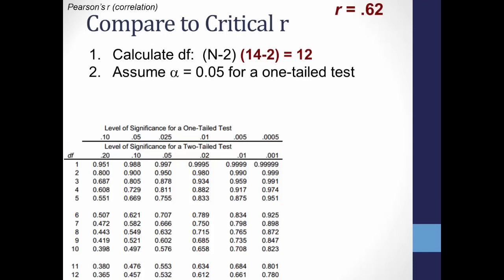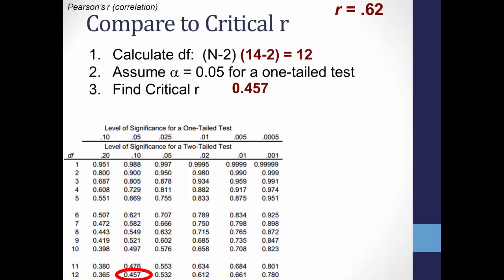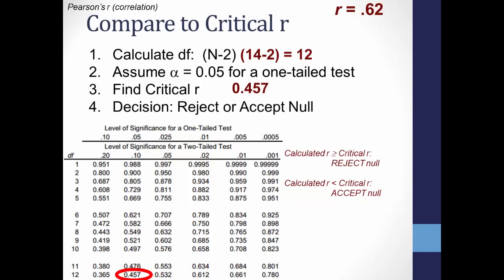Assuming an alpha level of .05 for a one-tailed test — meaning we're only willing to accept a 5% chance of error and want to be 95% confident — we look for the critical r. Find where 12 degrees of freedom intersect with a one-tailed test at .05, and that gives us 0.457 as our critical r value. If our calculated statistic is equal to or higher than the critical value, we reject the null hypothesis; if it is less, we accept it.